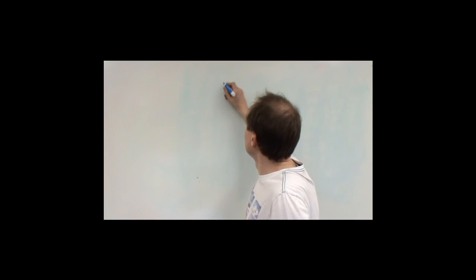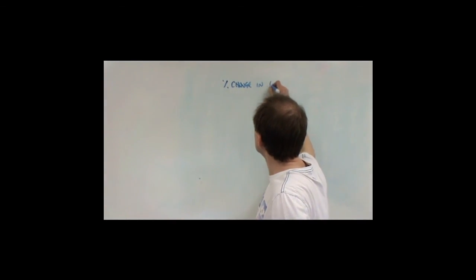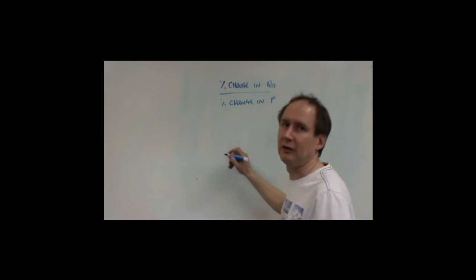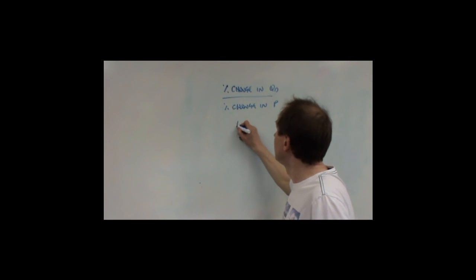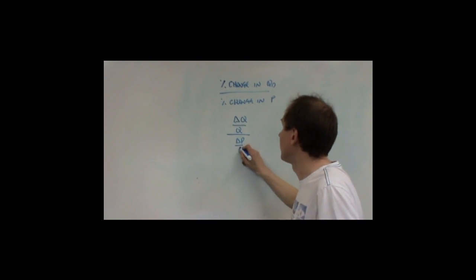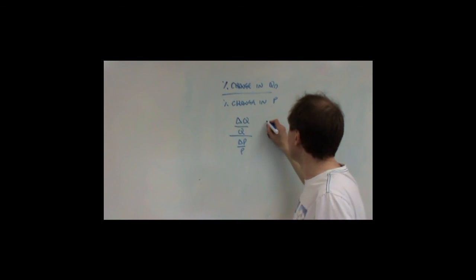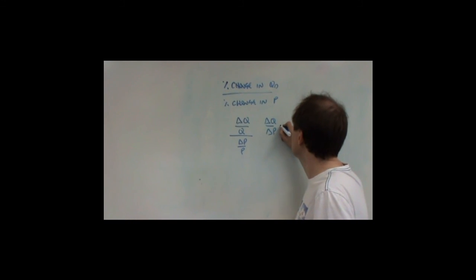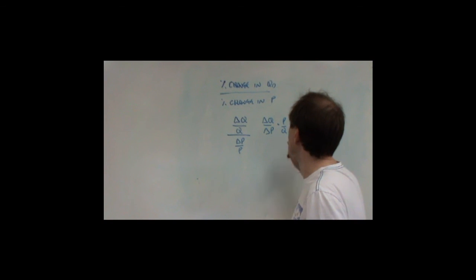If you take the formula, the percentage change in quantity demanded divided by the percentage change in price. If you write that mathematically, that's actually the change in quantity divided by the original quantity, divided by the change in price, divided by the original price. If you rearrange that, you get the change in quantity over the change in price, times price over the original quantity.